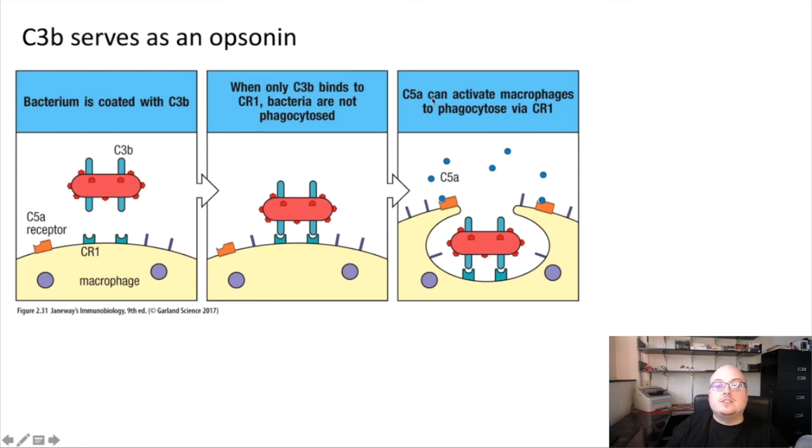We also need a second signal in the form of C5A binding to its receptor on the surface of the same cell. And when C5A and C3B bind to the surface of the macrophage, that double signal is enough to induce the ingestion of the bacterium or whatever it is into the lysosome and ultimately to be broken down. So in this way, C3B sort of collaborates with the anaphylatoxins in order to induce phagocytosis of bacteria.